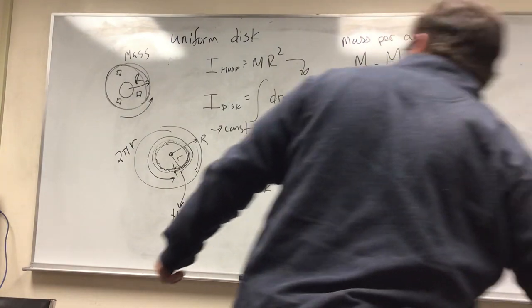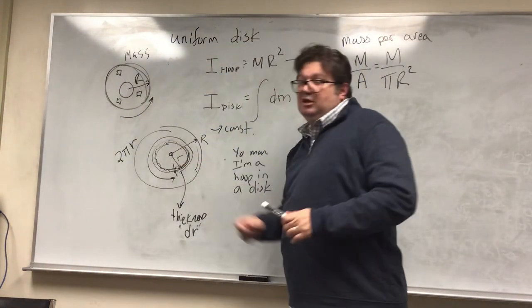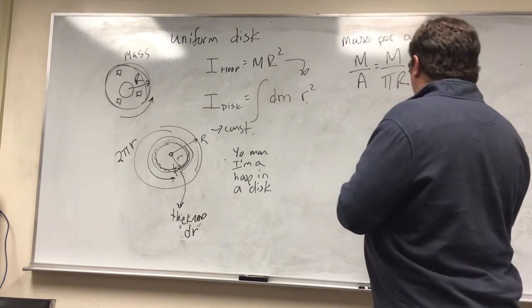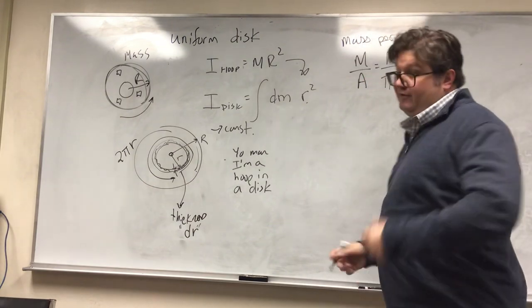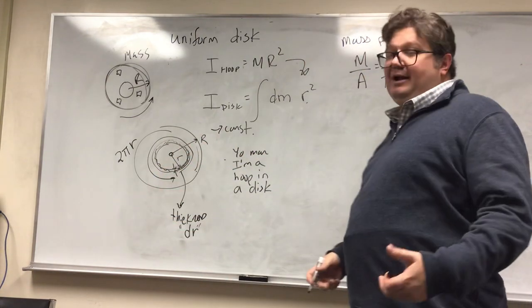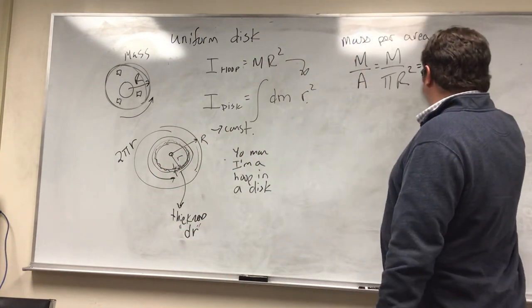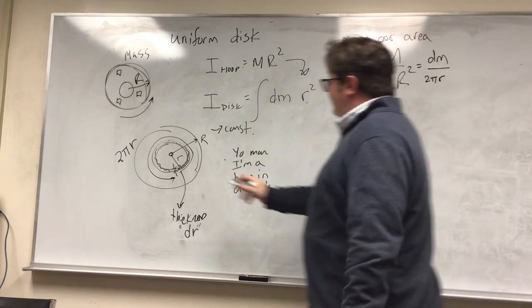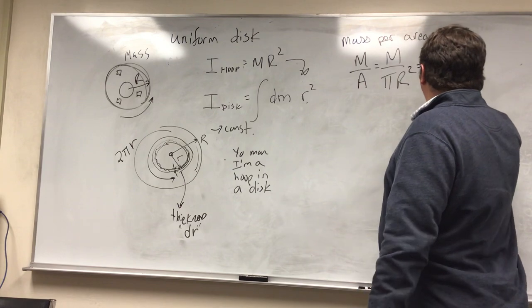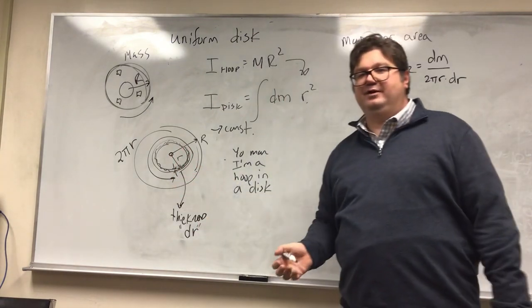So for my infinitesimally small little hoop here, I know how to write down what the area is. Well first off, its mass is going to be infinitesimally small, it's going to be dm. The area, this is going to be 2 pi r, that's the circumference around the hoop, times dr. That's how thick my hoop is.